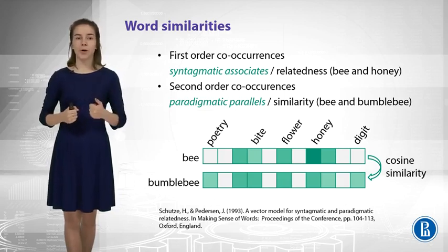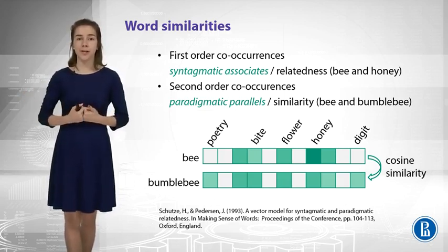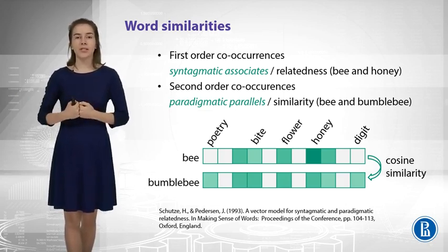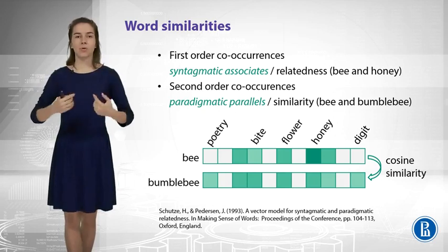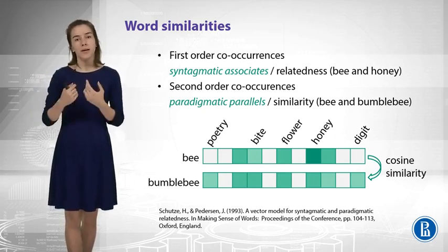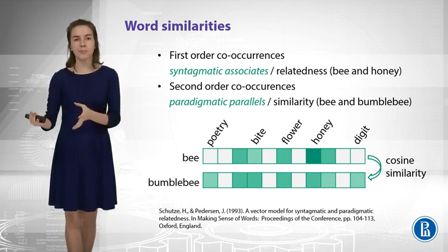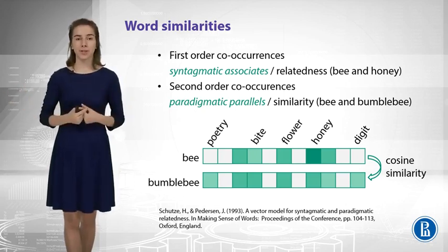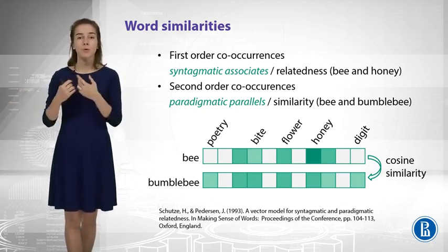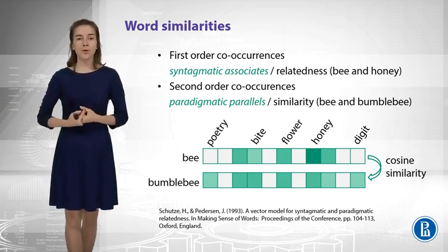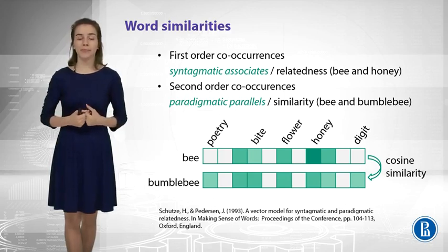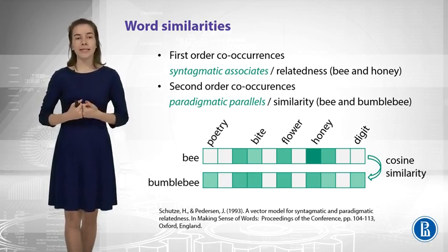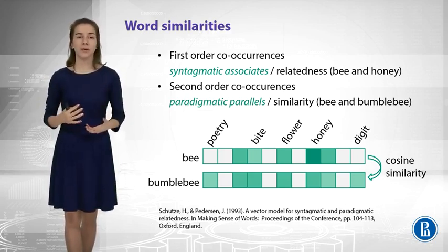However, if we get back to our example to understand that tap and faucet are similar, that's not what we need. We need to look at second-order co-occurrences, which means that these two words would co-occur with similar words in their contexts. For example, we can compute a long sparse vector for bee that says what are the most popular neighbors of this word, and also count the same vector for bumblebee. After that, we compute similarity between these two vectors. This way, we will understand that bee and bumblebee can be interchangeably used in the language, which means they are similar.